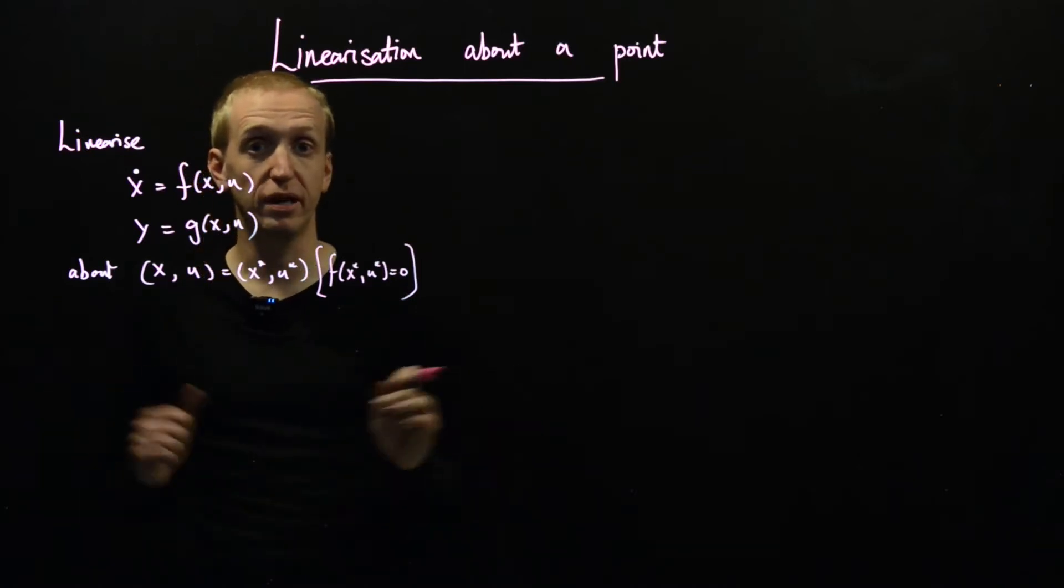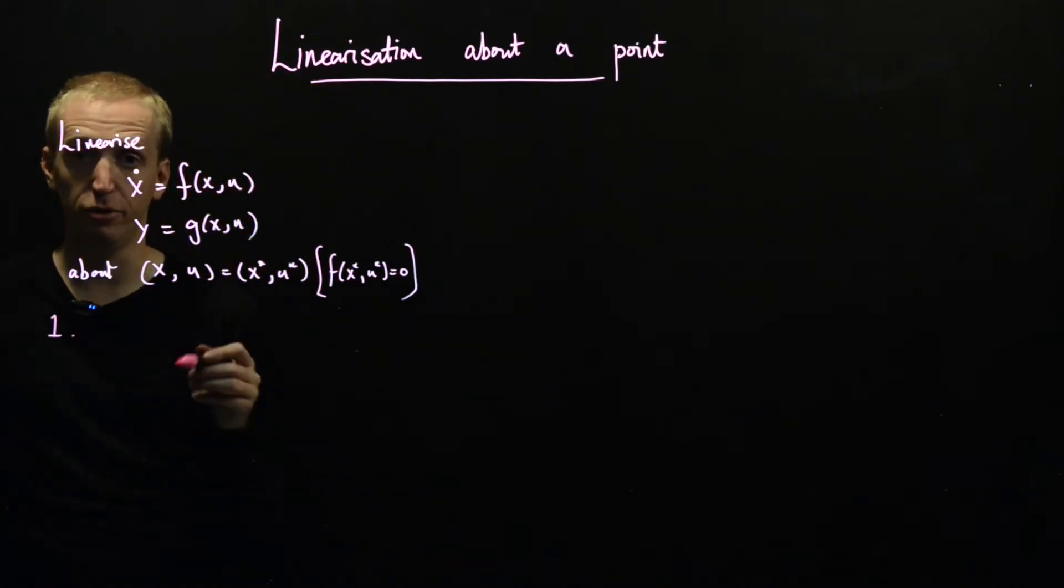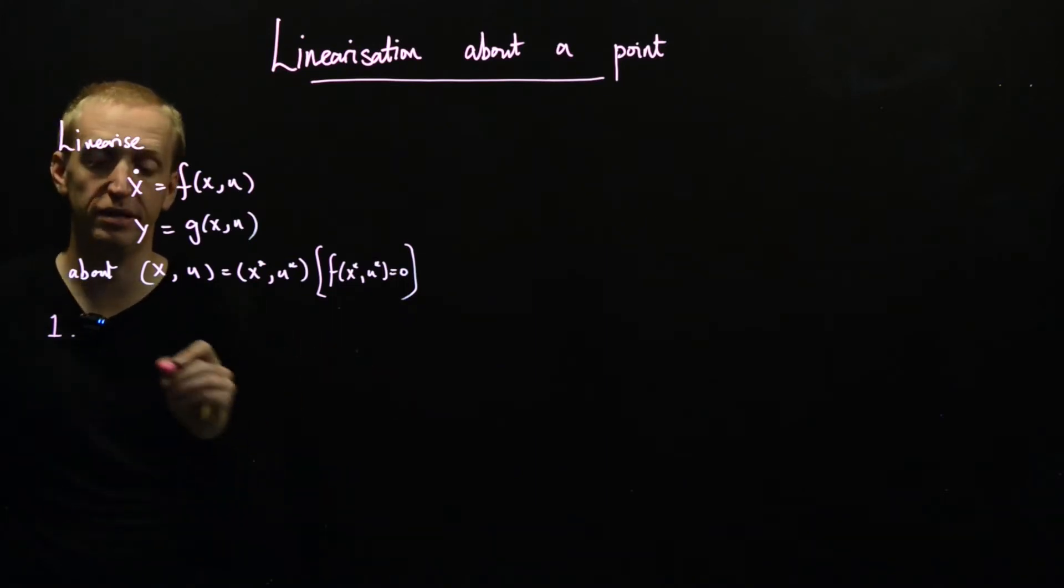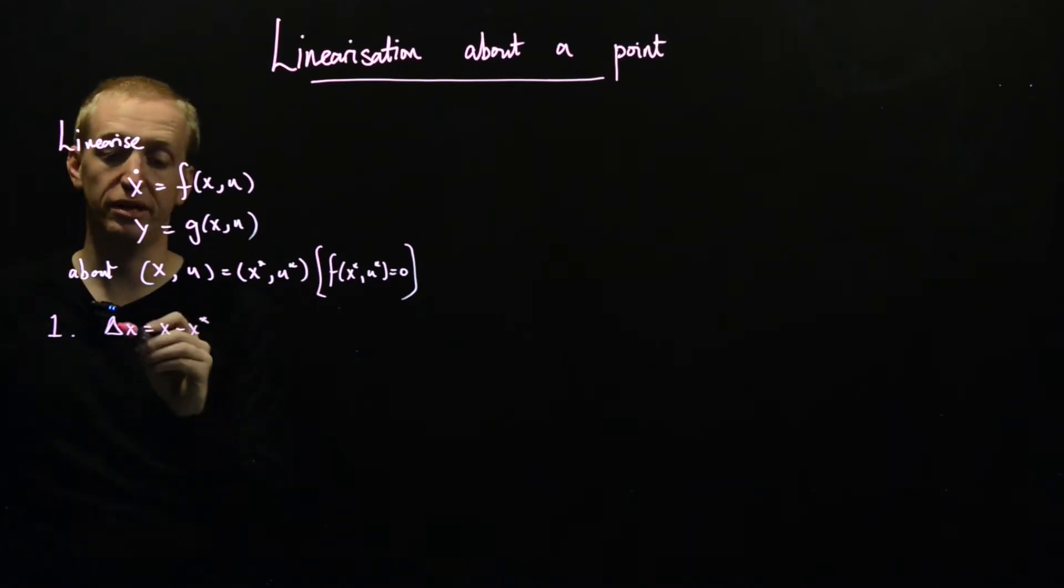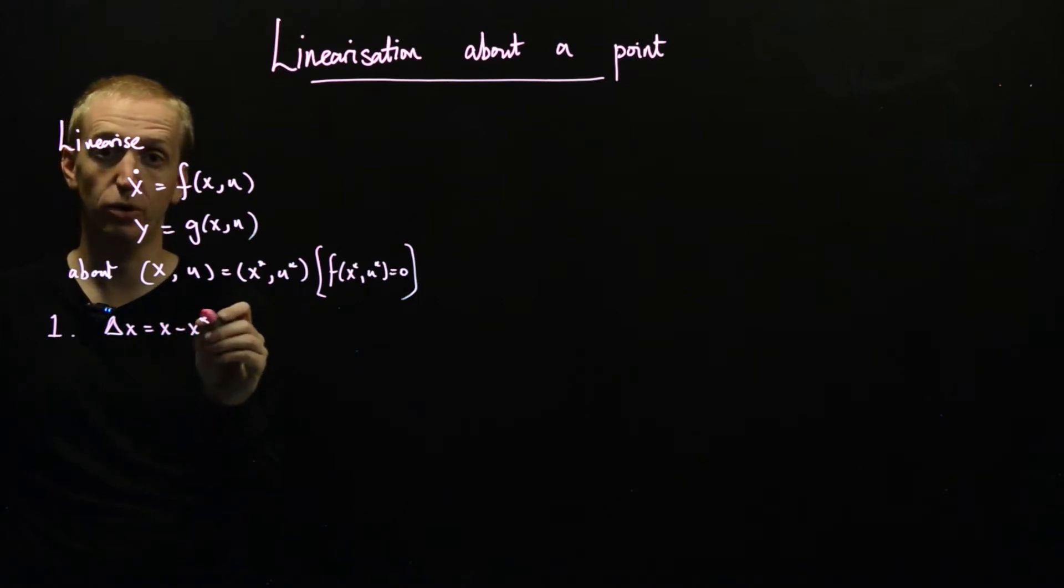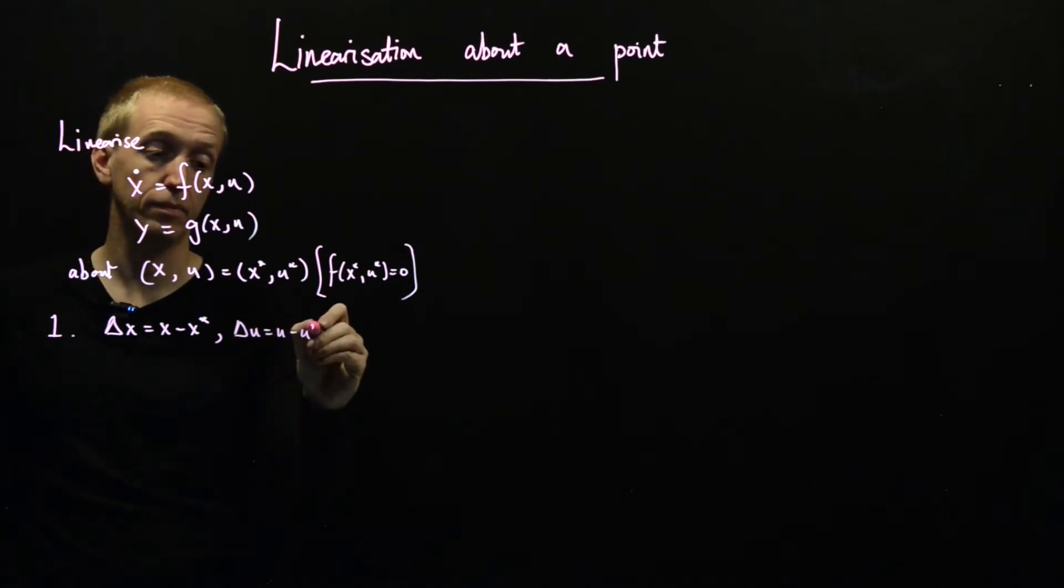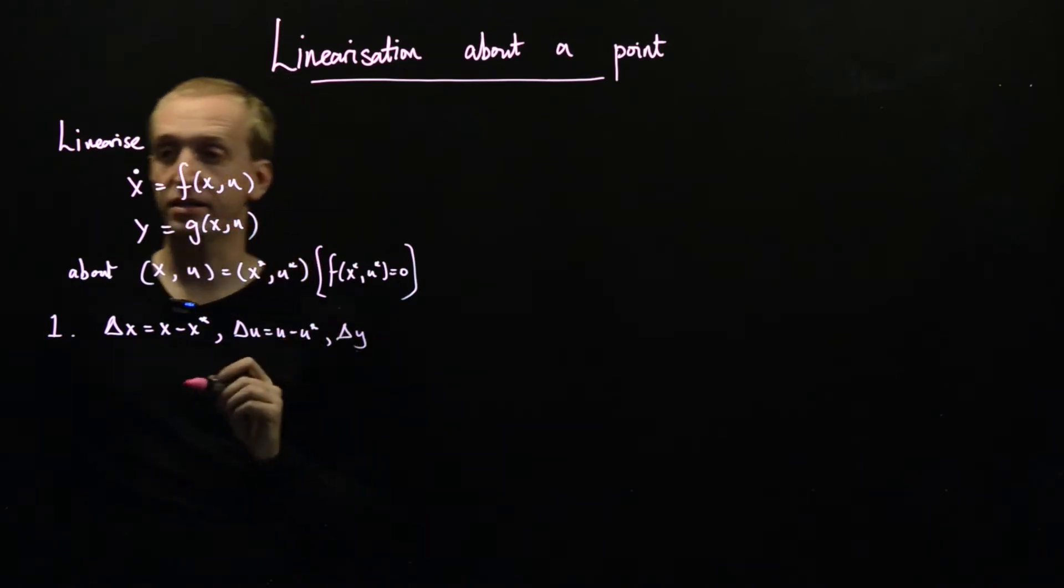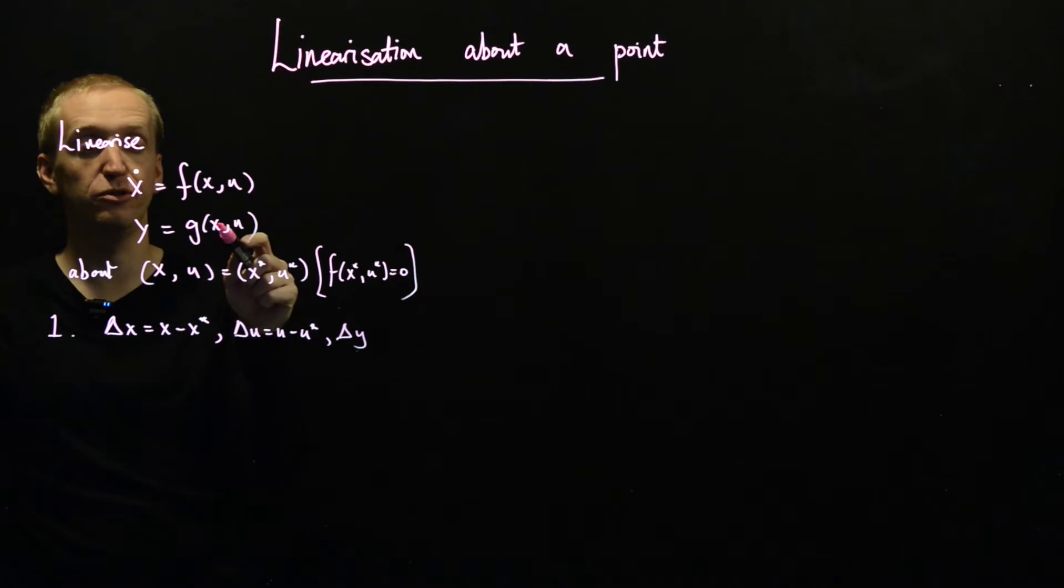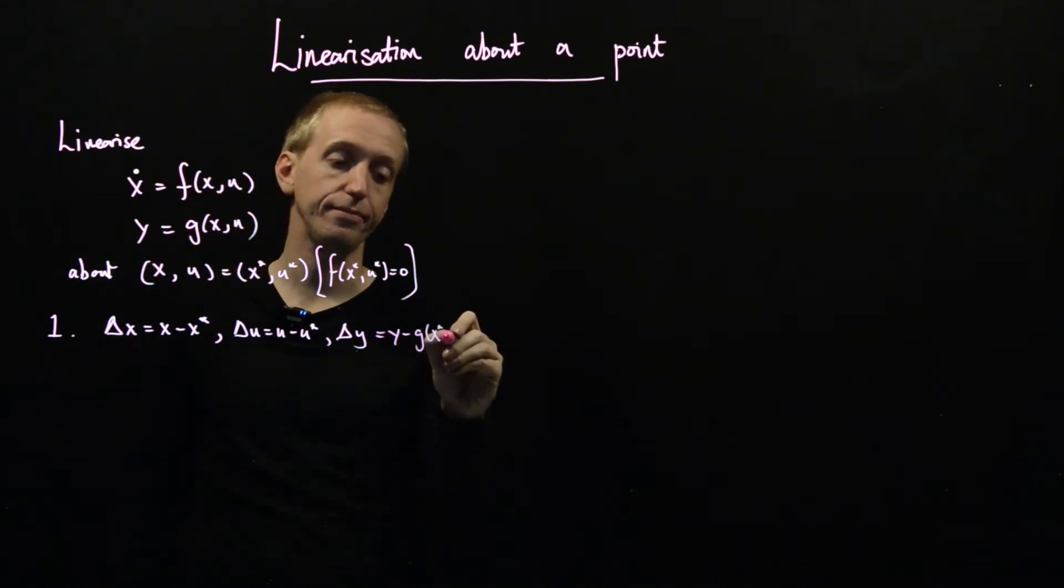And we're just going to do exactly what we did with the phase portraits. So the first thing we're going to do is we're going to introduce a set of variables that measure our deviation from the equilibrium point. So these are going to be a variable delta x which is equal to x minus x star, so delta x gives you the distance between x and the equilibrium value of x. And we have the same for delta u. And we've got one variable left which is y, so we need a delta y, and this measures the deviation in y from its equilibrium values. So this is equal to y minus g x star u star.